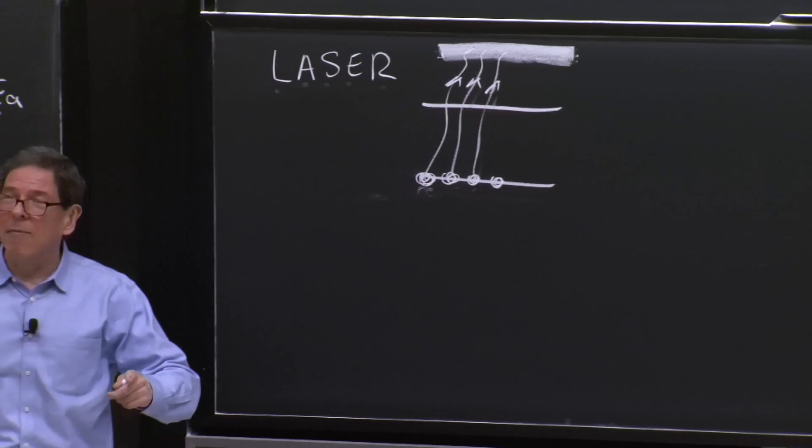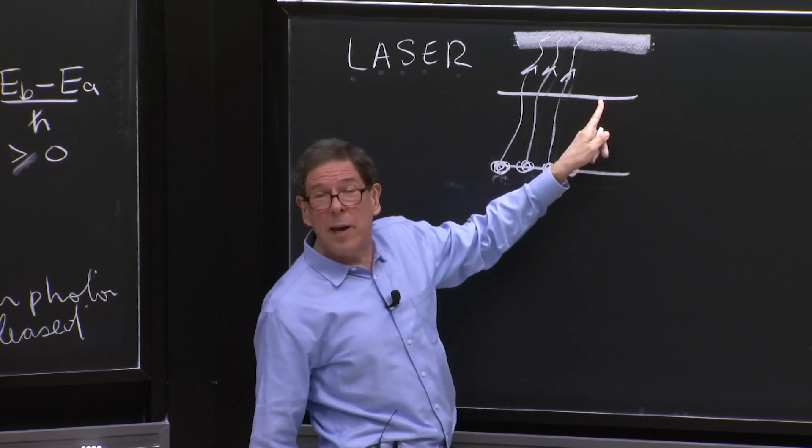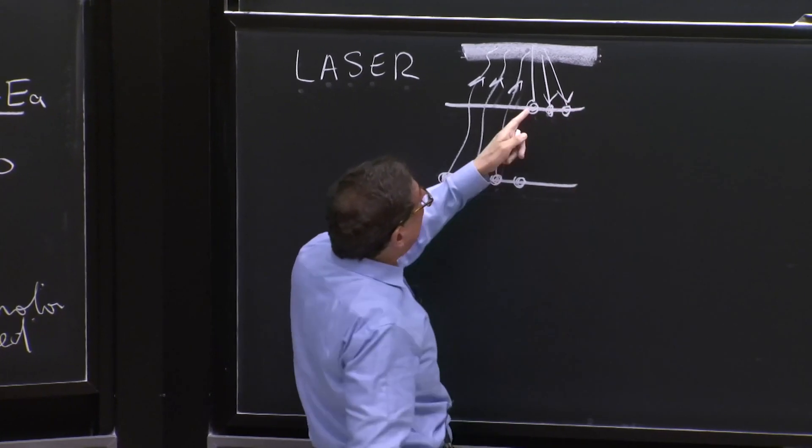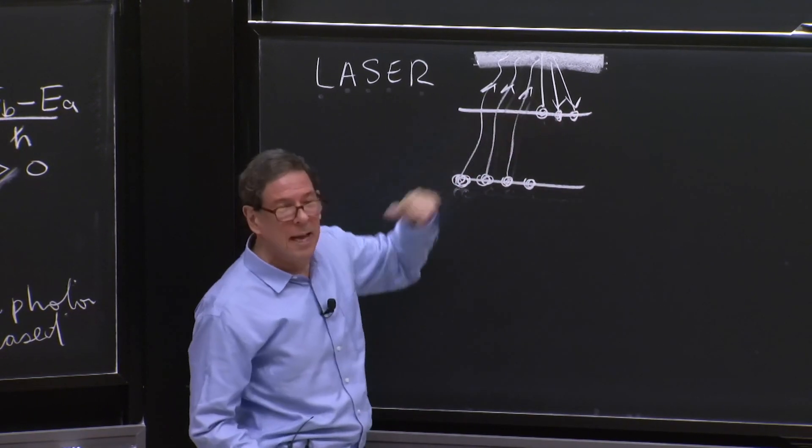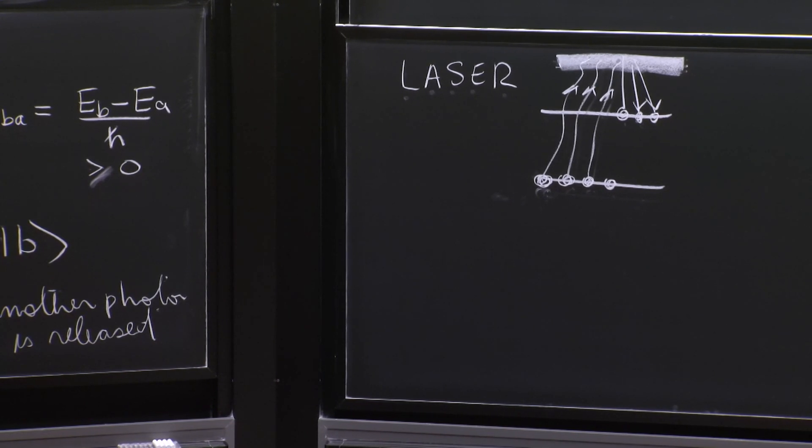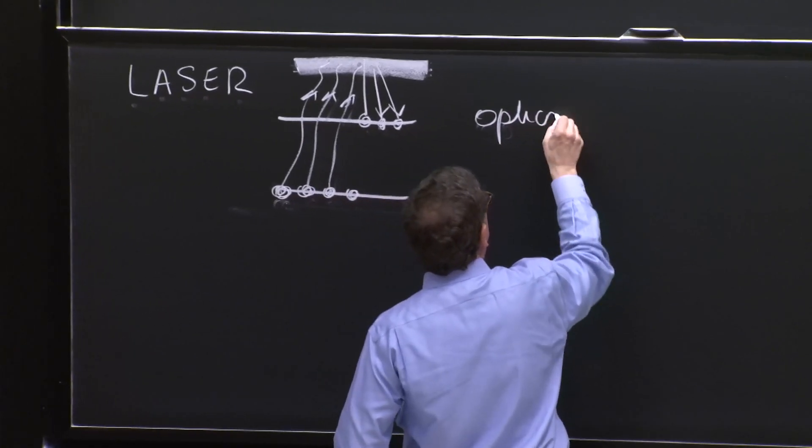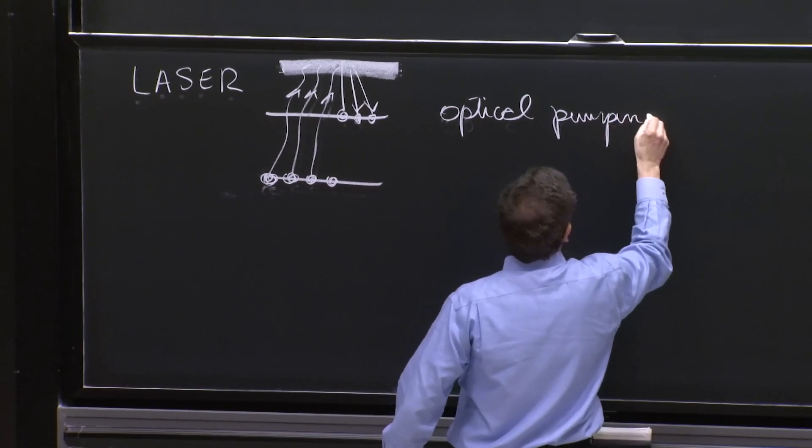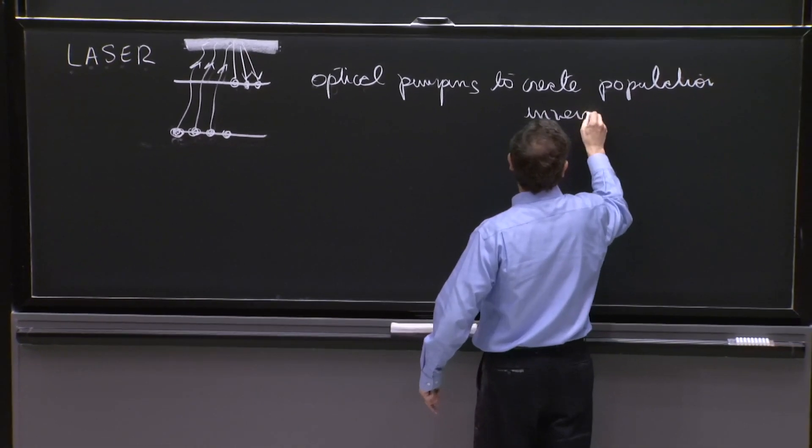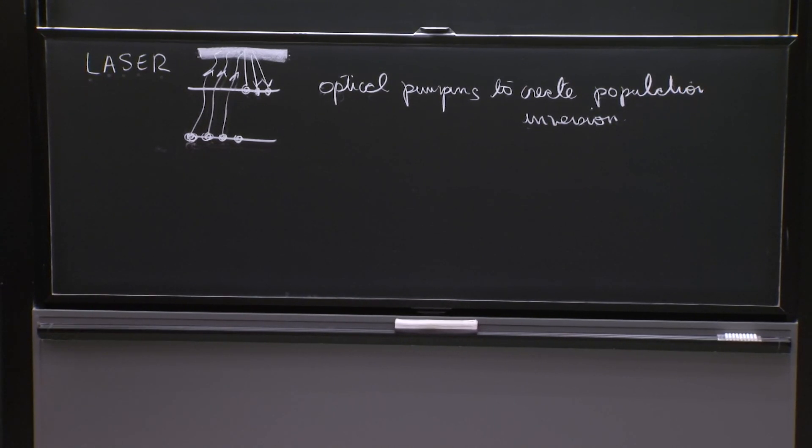And then it turns out that that third level, if you have the right atom, has a transition to this level that is rather quick. So the electrons fall here, fall very quickly. And the lifetime of these states here is very long. So they pretty much stay there. So this is the principle. It's this extra level is sometimes called the pump level. And so this is done by optical pumping. So optical pumping to create population inversion. That you get more states in the upper state than you would get in equilibrium, thermodynamic equilibrium.